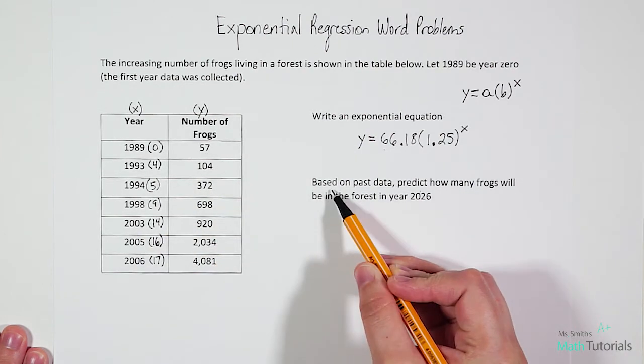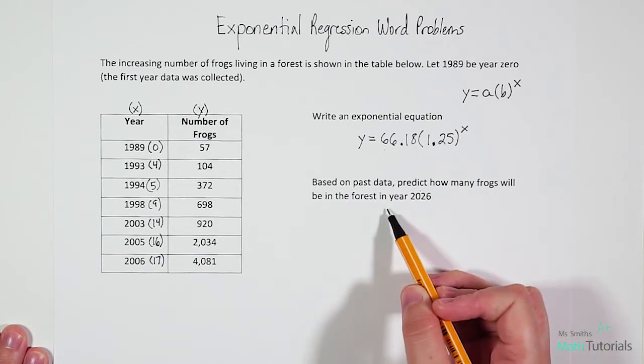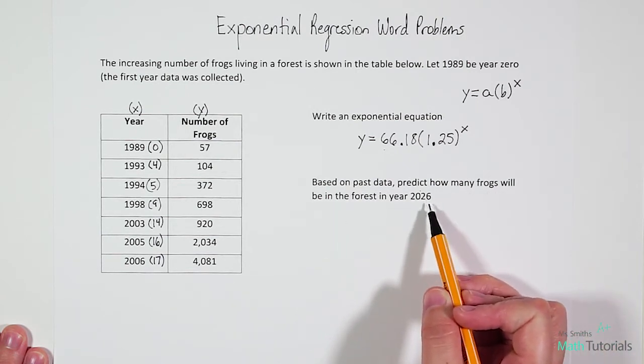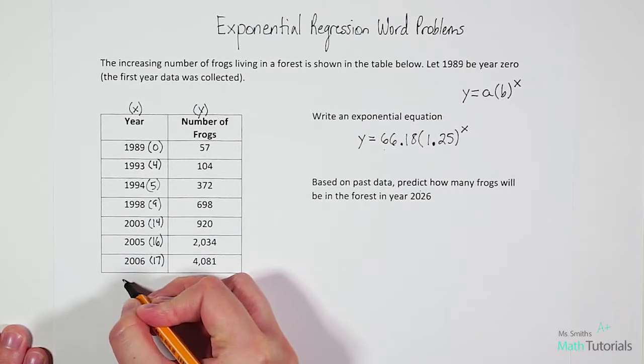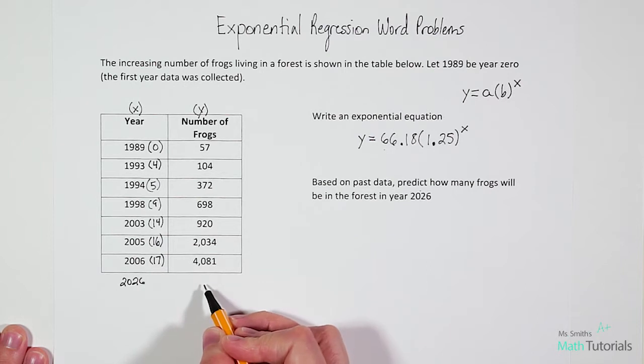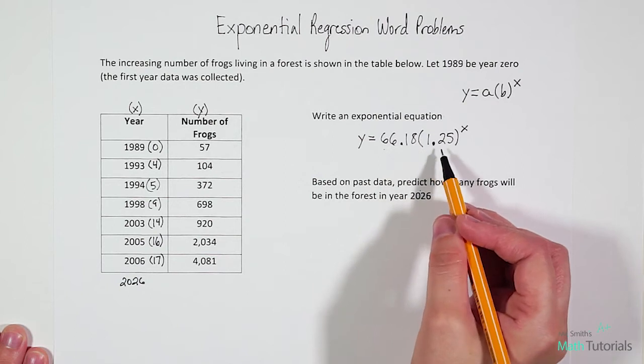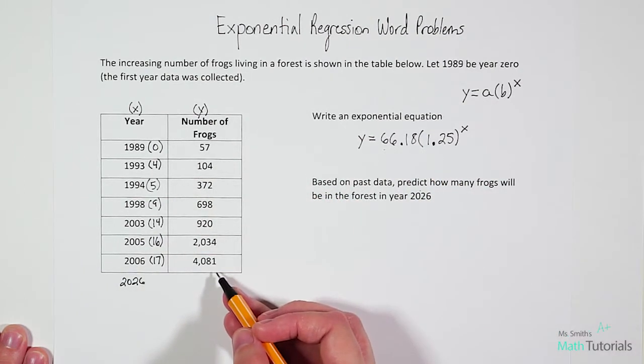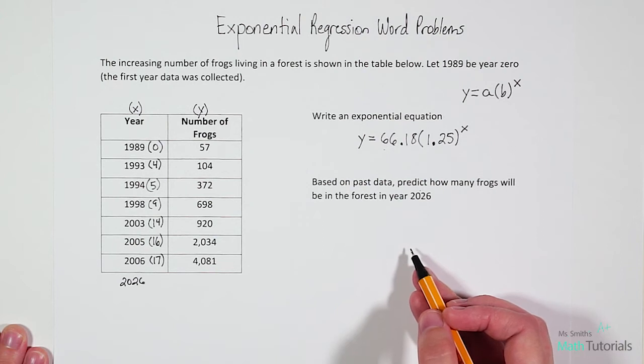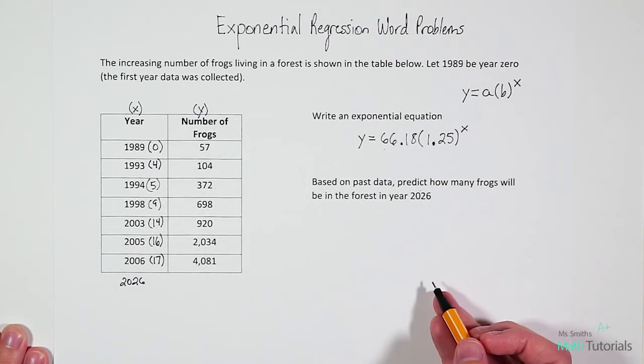Our second instruction says based on past data, predict how many frogs will be in the forest in year 2026. So they're basically saying if we added another data point down here, then what would be the predicted number of frogs? And a key word there is predicted. This equation is just taking past data to help us predict future data. We have no idea what will actually happen in real life to this frog population. But models like this help us predict what could happen based on past data.